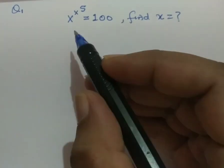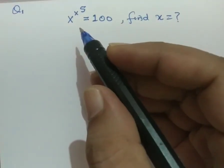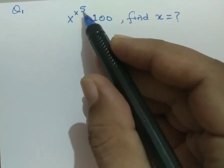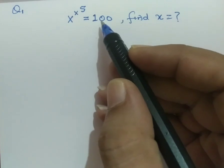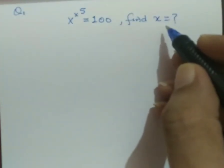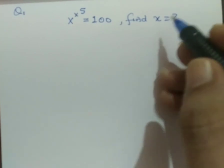Hi guys, today I have a very nice problem of Lampier Mathematics. x raised to the power x raised to the power 5 equals 100. Find the value of x. So let's begin to solve.